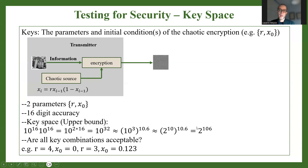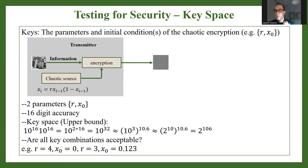This is barely above the acceptable keyspace, so it is not very good. An important problem in chaos-based encryption is that not all of these combinations are actually acceptable. For example, if r equals 4 but x0 equals 0, this will result in periodic behavior — so this combination of parameters is not acceptable.